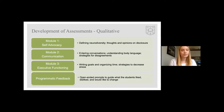Module one on self-advocacy consisted of seven questions on topics of neurodiversity, why you would or would not disclose your disability, and how you would disclose to various types of people. Module two on communication had four questions to assess students' understanding of entering conversations, reading body language, and engaging in disagreements. Module three on executive function had three questions to assess students' ability to write SMART goals, organize a schedule, and manage stress. Our programmatic feedback questionnaire had eight questions asking about perceptions of the program, what they liked and didn't like, what they would like to see more of, and what the greatest thing was that they gained from the program.